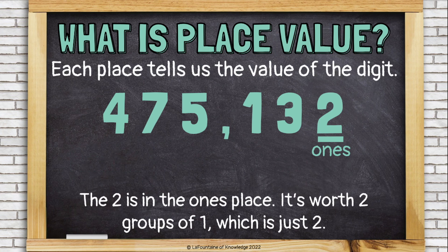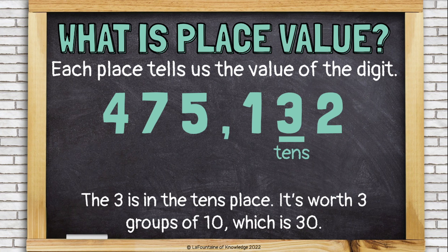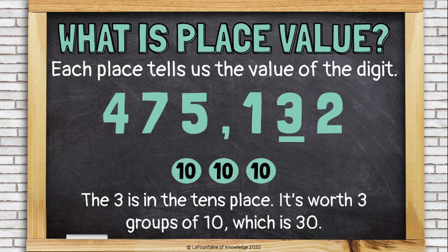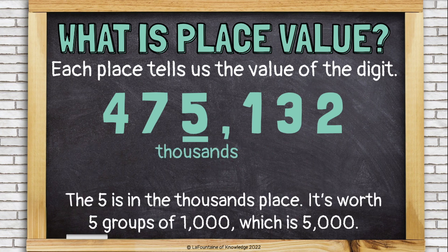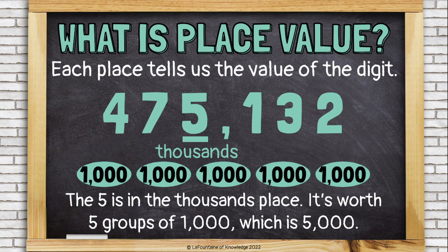Each place tells us the value of the digit. The two in the ones place is worth two groups of one, which is just two. The three is in the tens place, so it's worth three groups of ten, which is 30. The one is in the hundreds place, so it's worth one group of 100, which is 100. The five is in the thousands place — it's worth five groups of 1,000, which is 5,000.